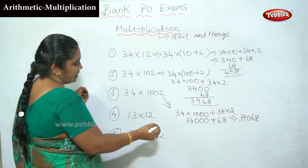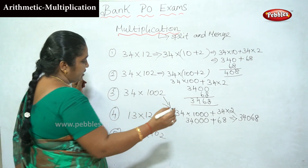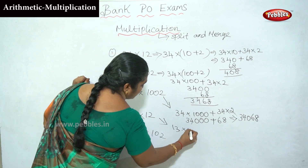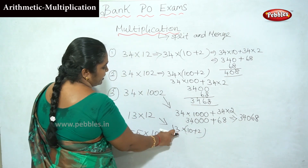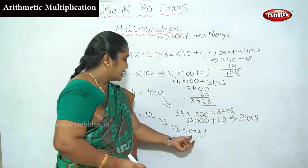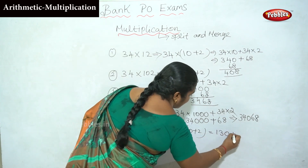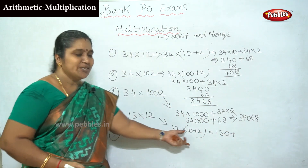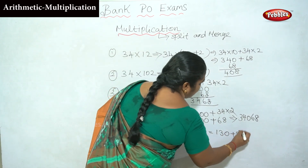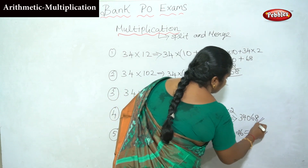Now this is simple. 13 into 12. Split 12 as 10 plus 2. 13 into 10 plus 13 into 2. Tell us what to do — 13 into 2 is 26. 13 into 10 is 130. Total: 130 plus 26 equals 156. That is the answer.